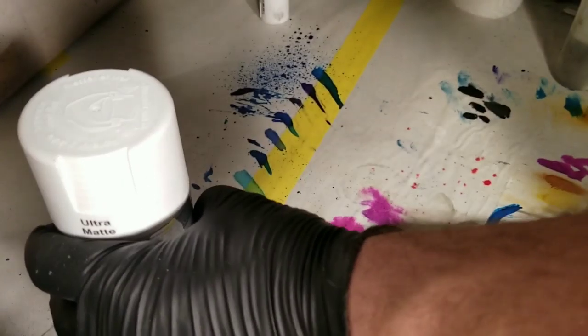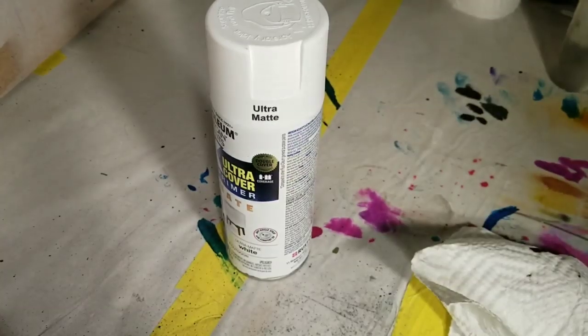Alright, now at this time you should have a nice smooth finish. Look at that, isn't that so beautiful? The next step is gonna be to do the flat white by Rust-Oleum.